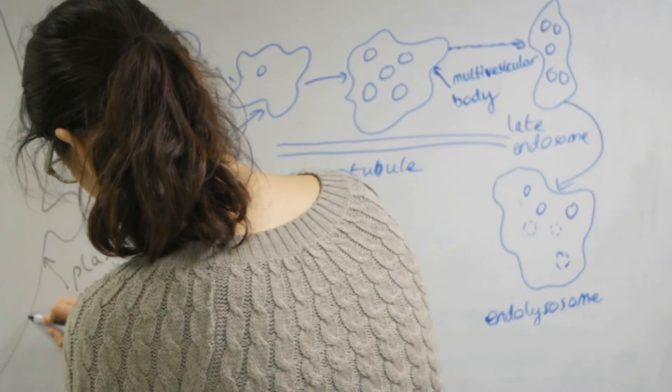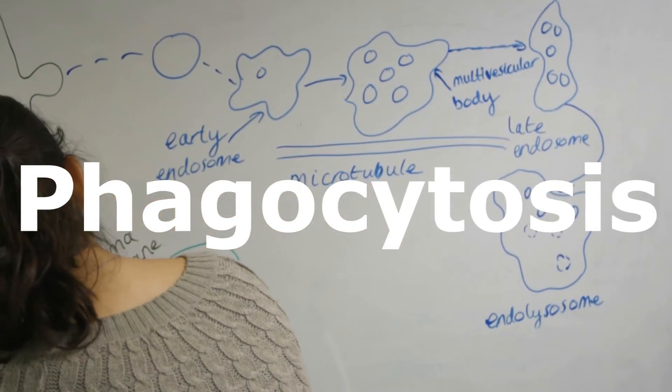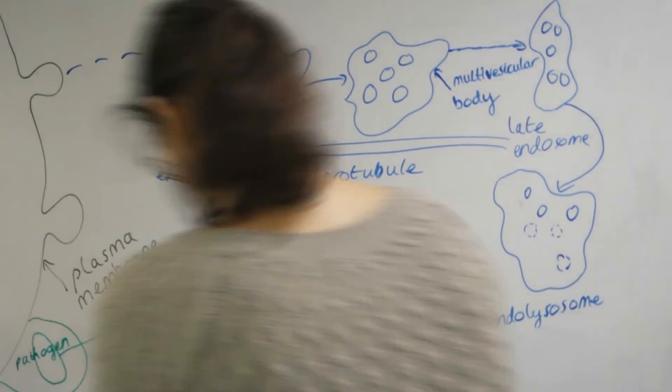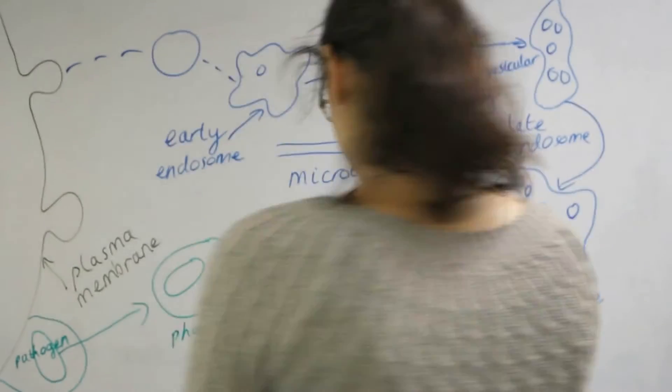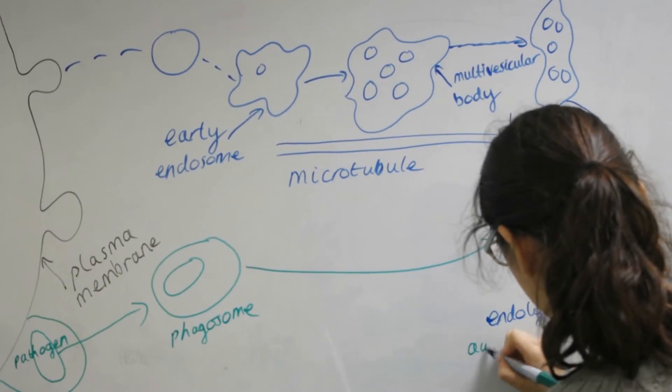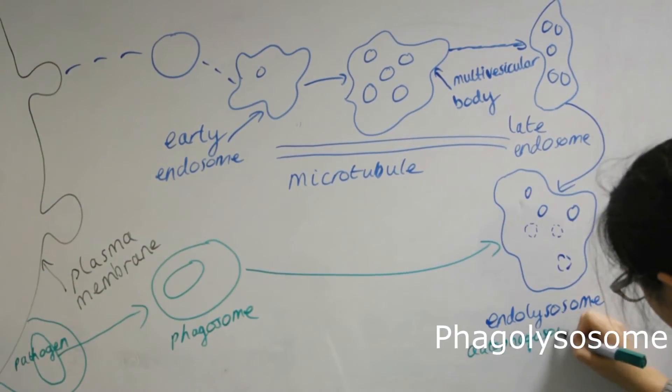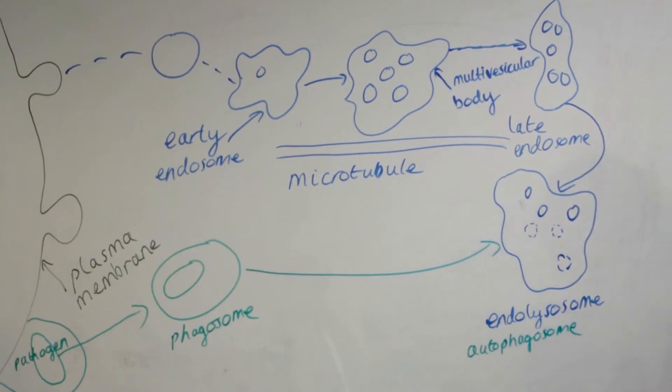The next degradation pathway is called phagocytosis. This is when a pathogen is internalized within the cell into a phagosome. The phagosome will also travel along the cytoskeleton of the cell and fuse with a lysosome forming a phagolysosome. The pathogen is released into the lumen of the lysosome and is degraded.